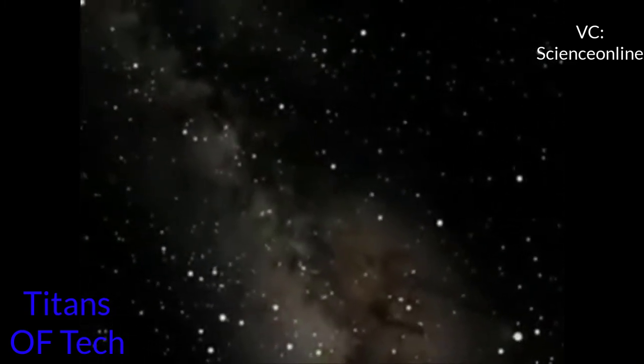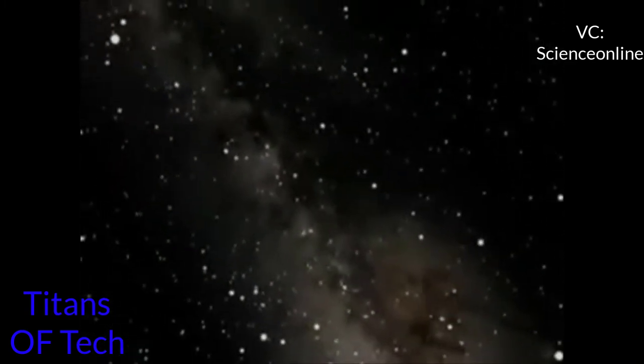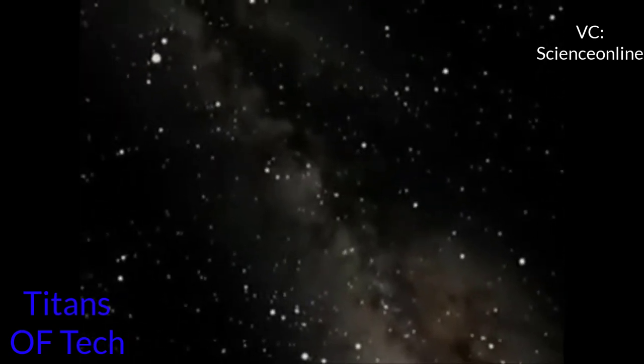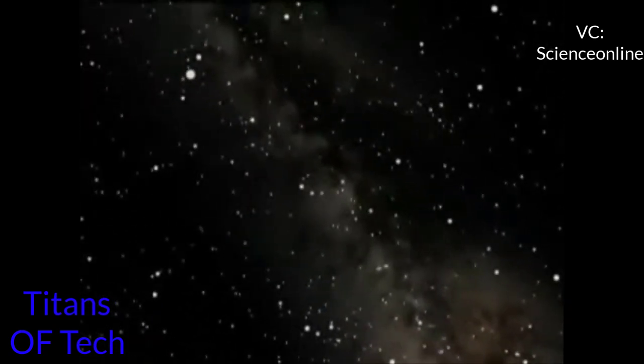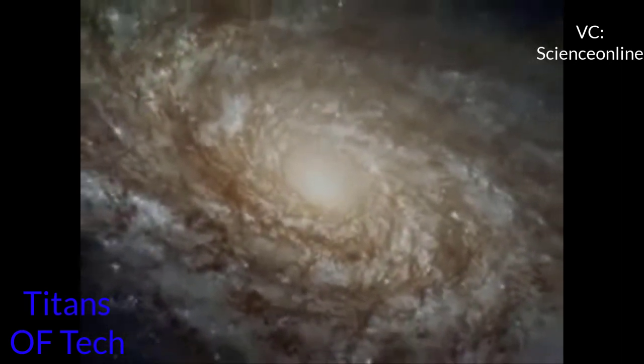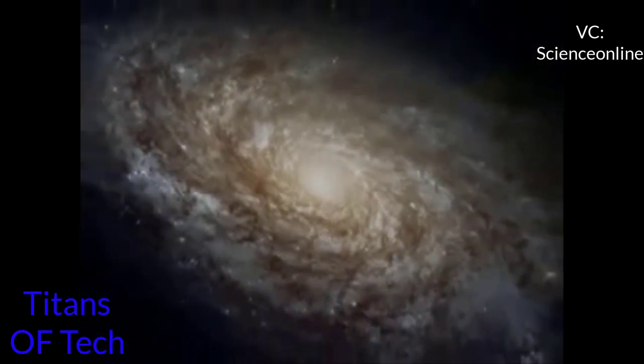This soft glow is created by billions of stars. We call our galaxy the Milky Way galaxy. Astronomers classify our galaxy as a spiral galaxy. If we could view it from out in space, it might look like this.